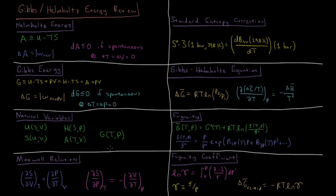Similarly, from the Gibbs energy we get that the derivative of entropy with respect to pressure at constant temperature equals the negative partial derivative of volume with respect to temperature. These values are much easier to obtain, given that we can measure the properties of gases at various states.